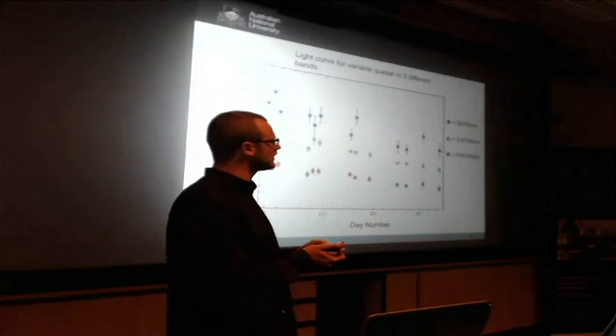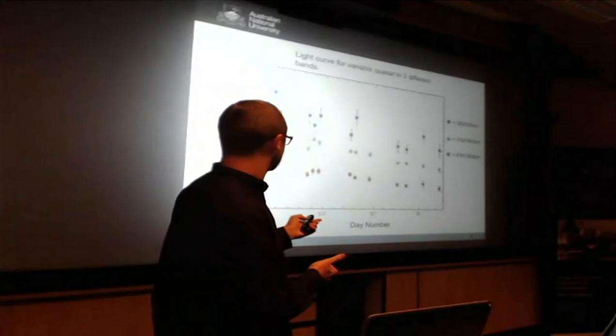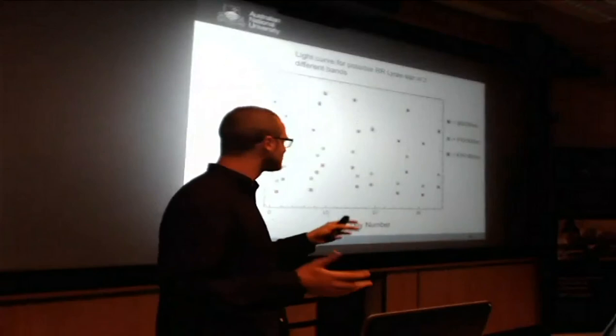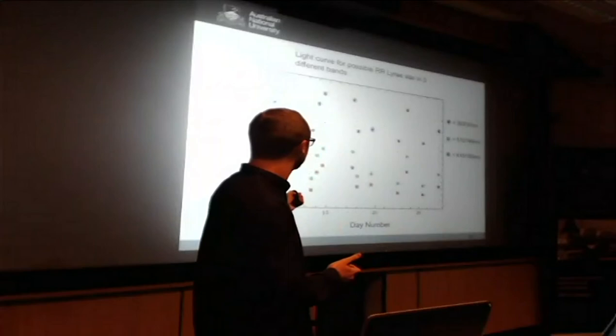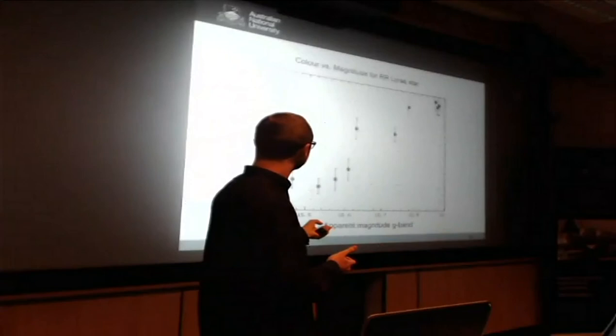Our goal was to detect these time lags, which we didn't really reach. I put in just another variable object. This is a possible RLRI star. I don't know too much about them, but I just plotted the points, and as you can see, it's a varying star like this.